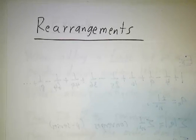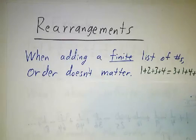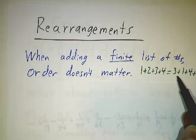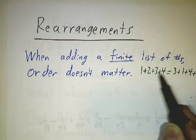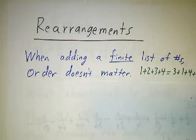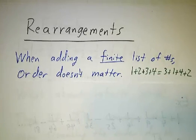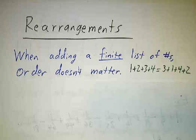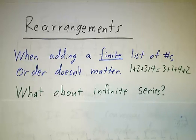When you learned about addition way back in elementary school, you probably learned that the order in which you add things doesn't matter. If you want to add 1 plus 2 plus 3 plus 4, that's the same thing as adding 3 plus 1 plus 4 plus 2. You can scramble the terms in whatever order you want, and it just doesn't matter. And that's true whenever you have a finite number of terms. But what happens if you have an infinite number of terms — that is, what happens if you have an infinite series?